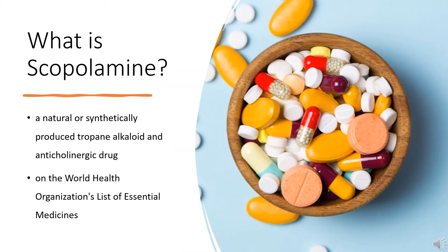Scopolamine, also known as hyoscine or devil's breath, is a natural or synthetically produced tropane alkaloid and anticholinergic drug that is used as a medication to treat motion sickness and postoperative nausea and vomiting. It is also sometimes used before surgery to decrease saliva. It is on the World Health Organization's list of essential medicines.